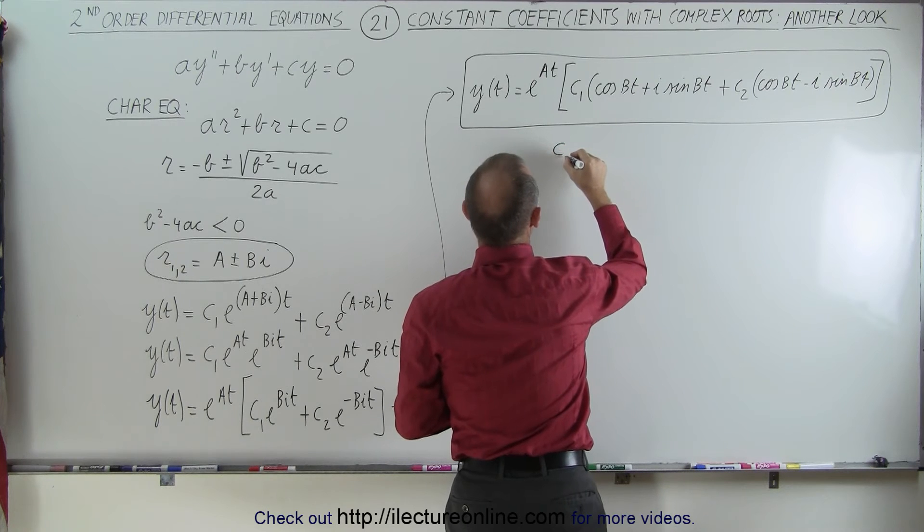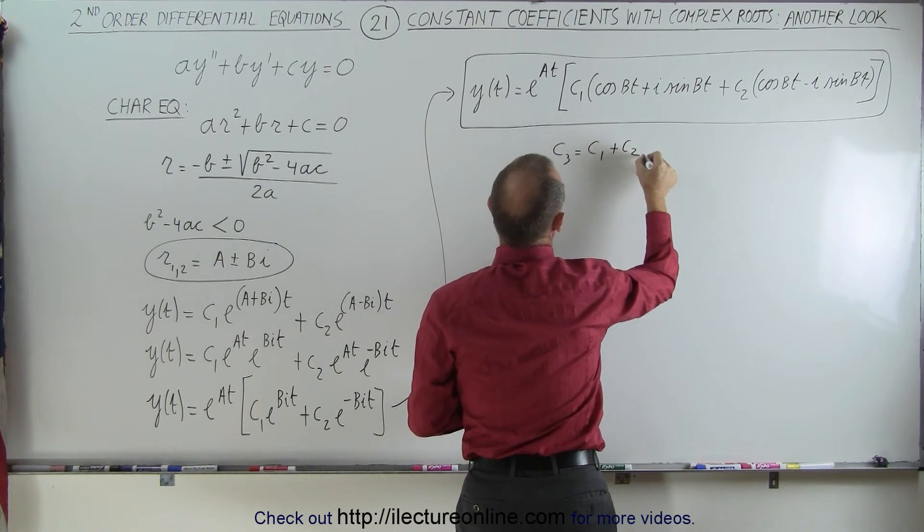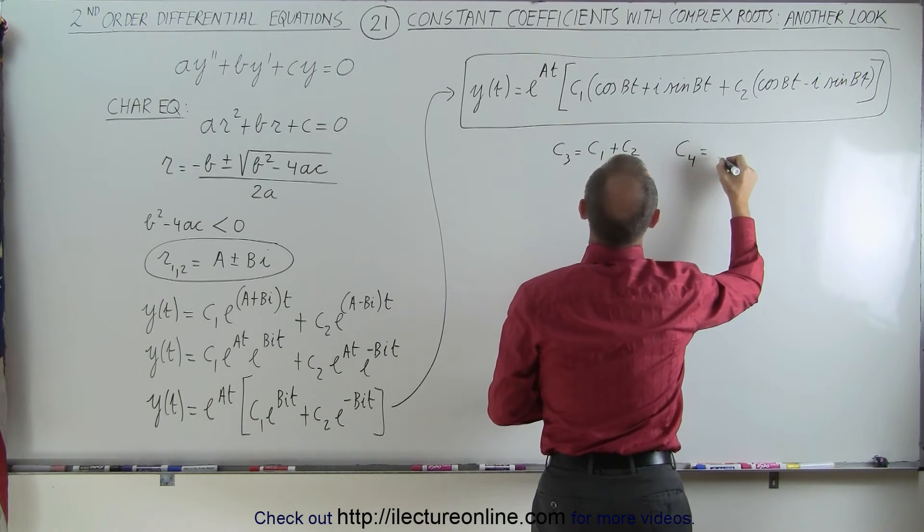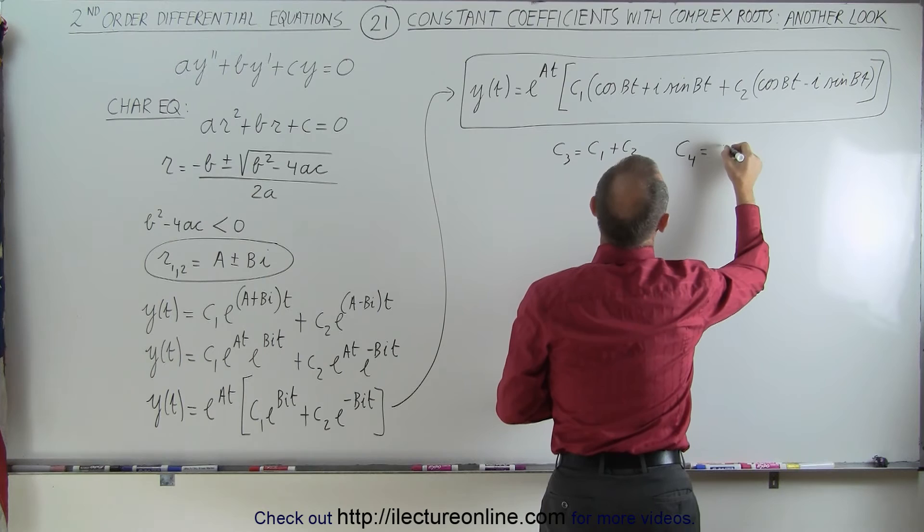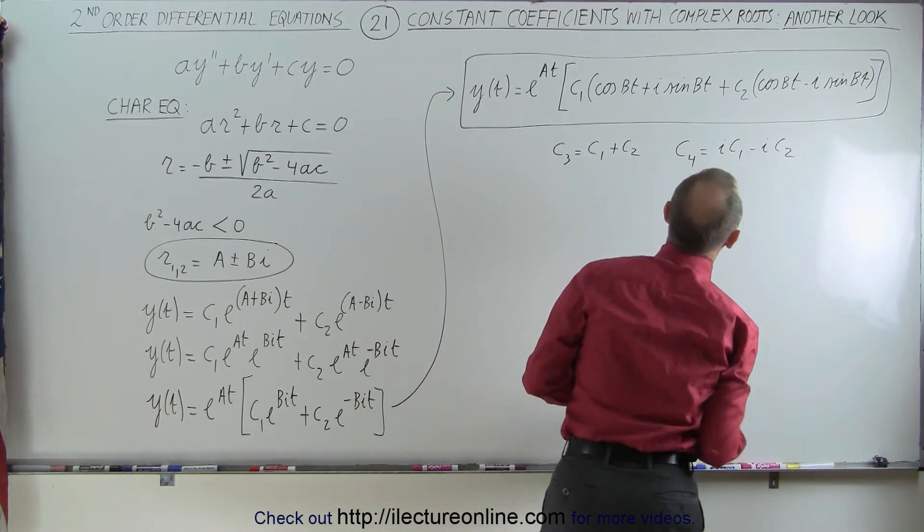We can come up with another constant, c3, which is simply equal to the sum of c1 plus c2. And we can come up with another constant, c4, which is going to be equal to i c1 minus i c2.